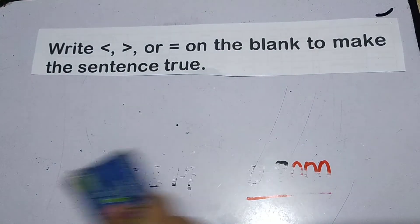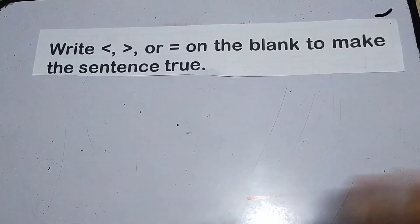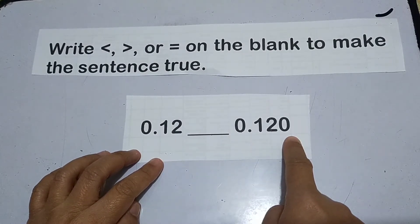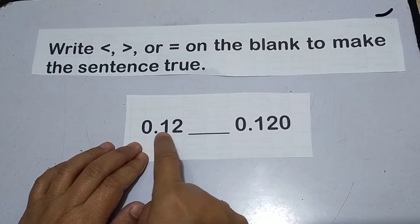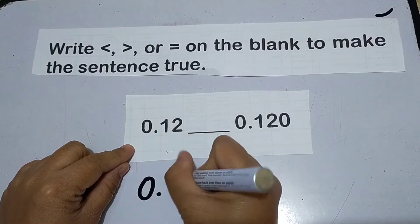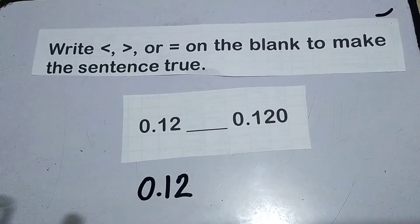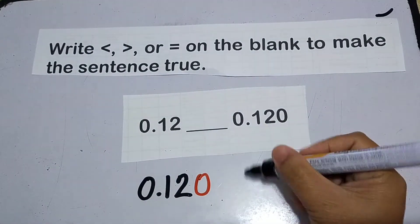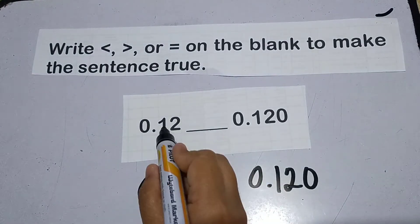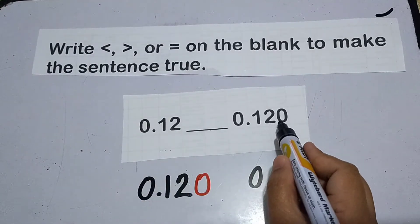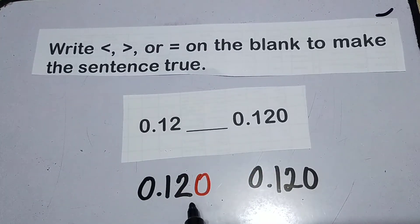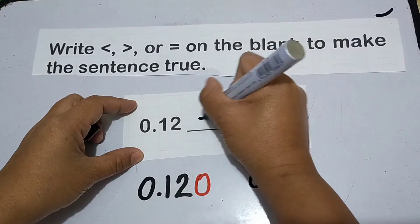Let's say this one. 12 hundredths and then 120 thousandths. You can see yung bilang ng digits sa kanan ng decimal point ay magkaiba. So ang technique natin, gawin natin uli. Gagawin natin magkaparehas yung bilang ng digit. Maglalagay tayo ng imaginary zero. Nire-write natin ito. As you can see, parehas lang sila. Pero ito, pag binasa 12 hundredths, ito naman ay 120 thousandths. So that means the same lang pala yung value nya. Then the answer is equals.